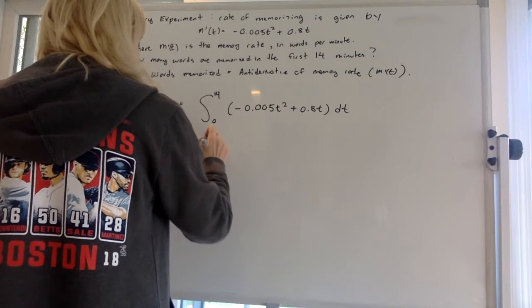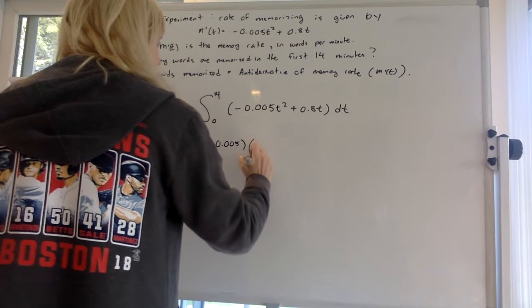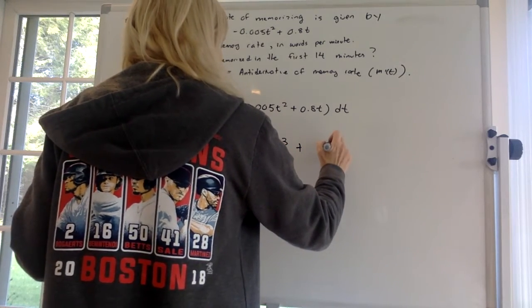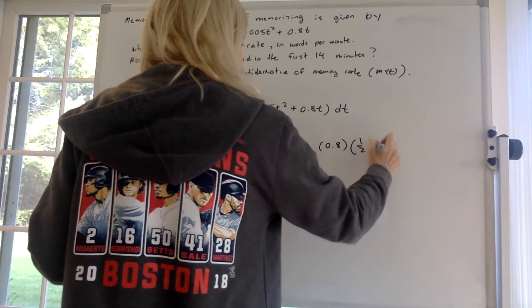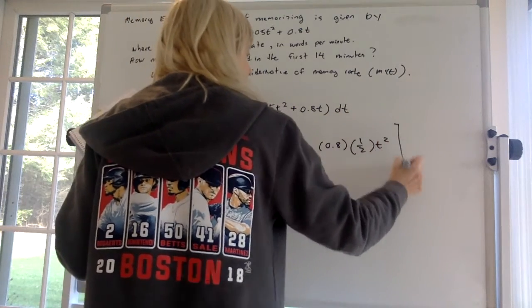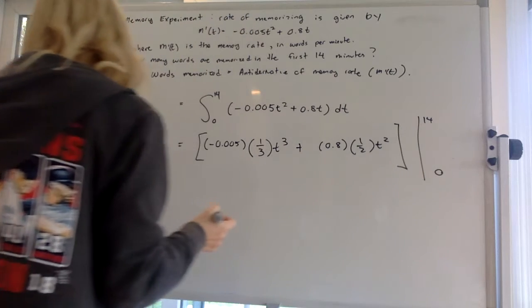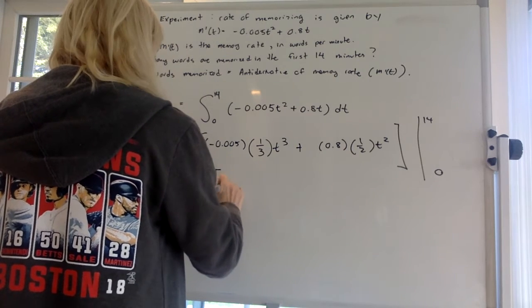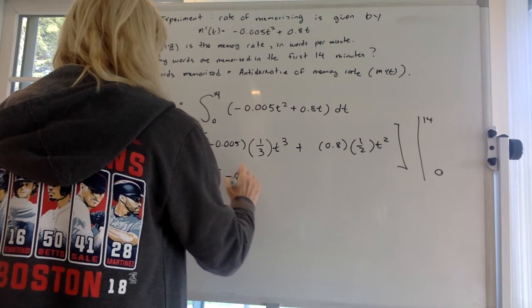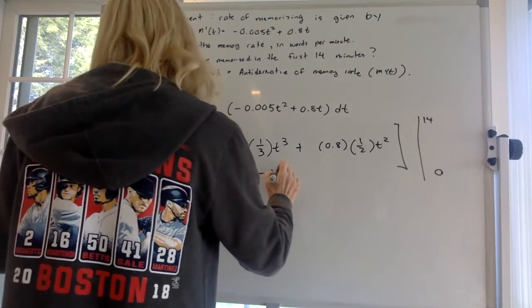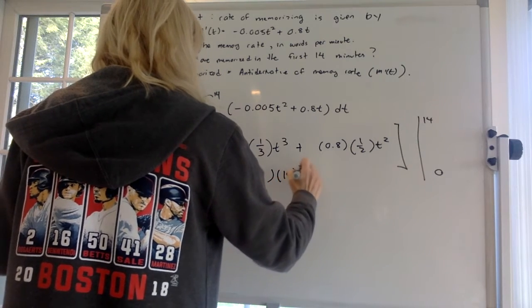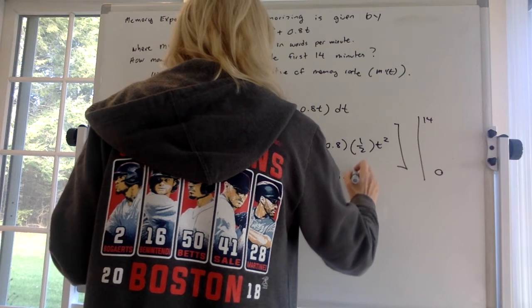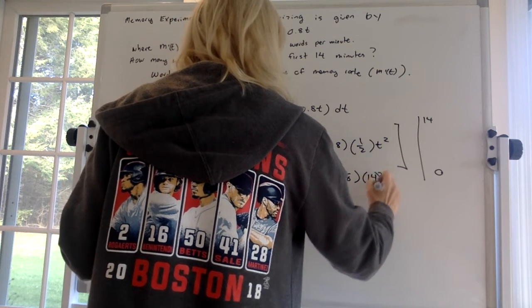So what do we get? We have -0.005 times 1/3 t³, plus 0.8 times 1/2 t². And that all goes between 14 and 0. So I think at this point I just plugged in. So I get -0.005 times 14³ over 3 plus 0.8 times 14² over 2.